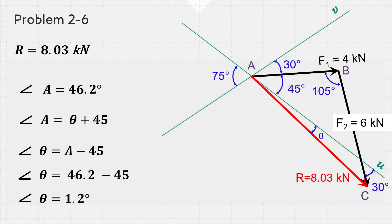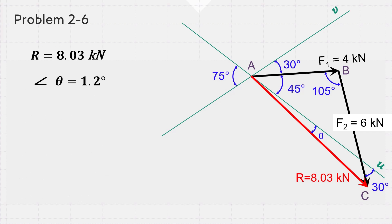We know that the measure of angle A equals theta plus 45 degrees. So the measure of theta equals angle A minus 45 degrees, equals 46.2 minus 45, equals 1.2 degrees. Finally, the magnitude of the resultant force of F1 and F2 is 8.03 kN and its direction is 1.2 degrees measured clockwise from the positive U-axis.